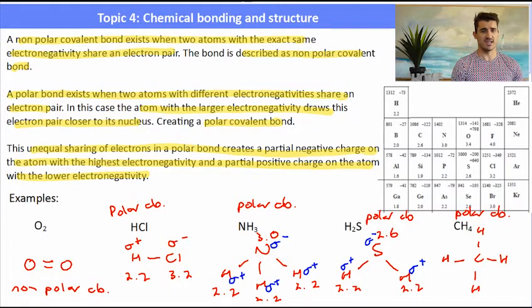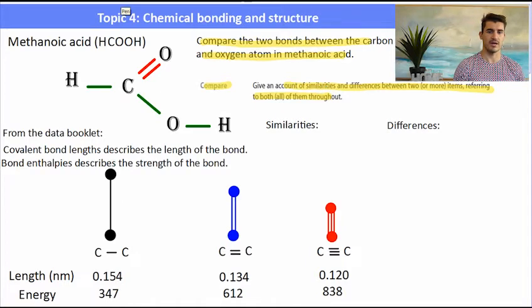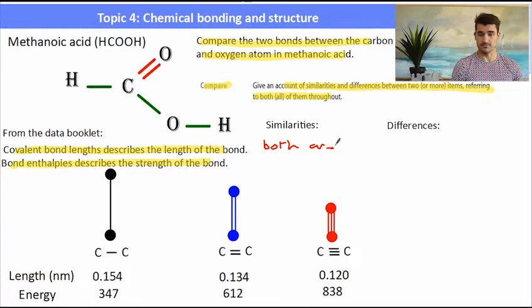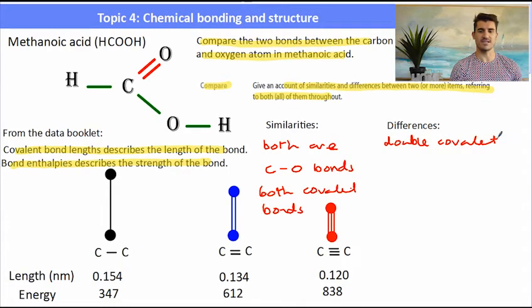The final thing we are going to discuss is an example question where we need to compare the two bonds between the carbon and oxygen atoms in methanoic acid. The command term 'compare' means give an account of the similarities and differences between two or more items, referring to both throughout. Remember that covalent bond length describes the length of the bond and bond enthalpies describe the strength of the bond. For similarities: they are both carbon-to-oxygen bonds, they are both polar covalent bonds, and they are both covalent bonds — so there are three good similarities. For differences: the double covalent bond shares two pairs of electrons, which means it is going to be both shorter and stronger than the carbon-to-oxygen single bond.